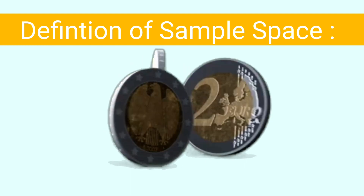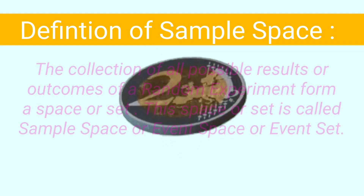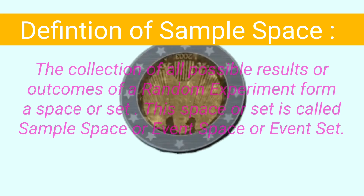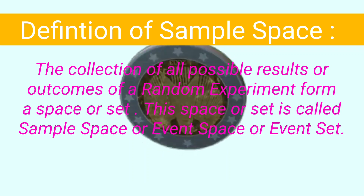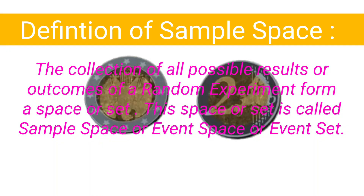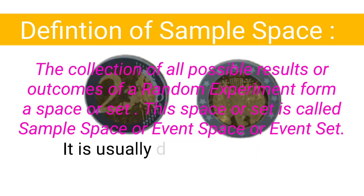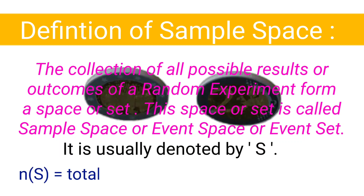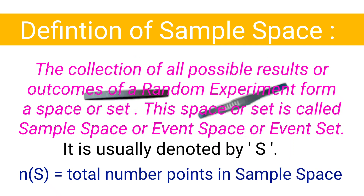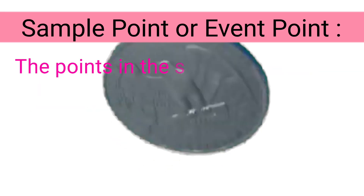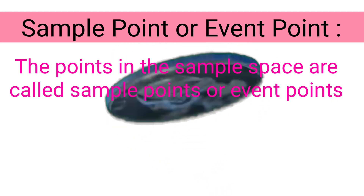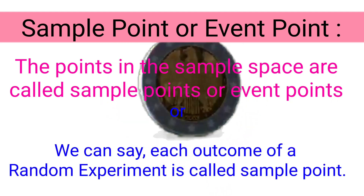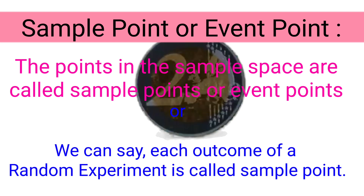Now we define sample space. The collection of all possible results or outcomes of a random experiment forms a space or set. This space or set is called sample space or event space. It is usually denoted by capital S, and n(S) equals the number of points in the sample space. The points in the sample space are called sample points or event points — each outcome of a random experiment is called a sample point.